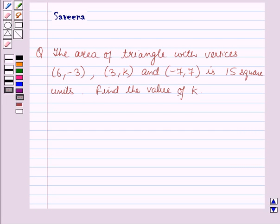Hello and welcome to the session. In this session we will discuss a question which says that the area of the triangle with vertices (6, -3), (3, k) and (-7, 7) is 15 square units. Find the value of k.